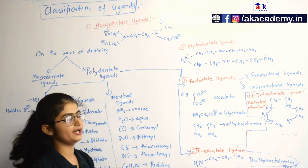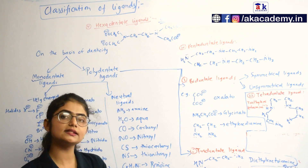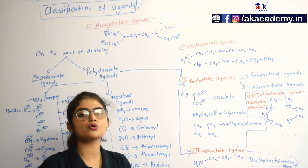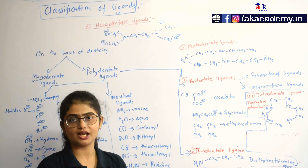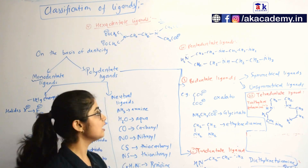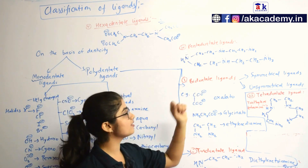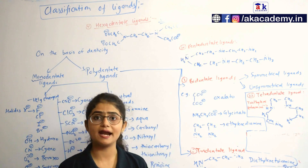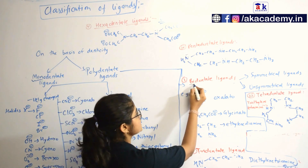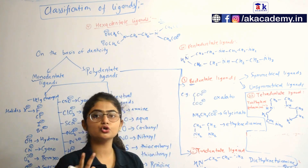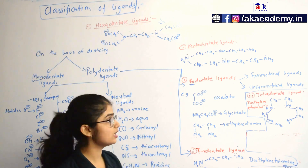Next, polydentate ligands. Polydentate means these ligands have more than one site of attachment to the metal. Among polydentate ligands, the very first type is the bidentate ligand, which has two sites of attachment to the metal.